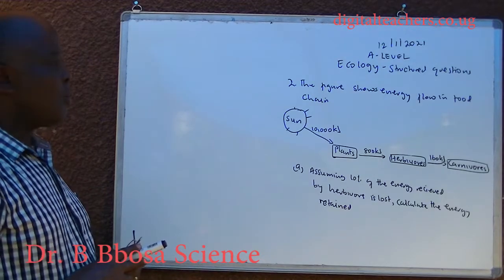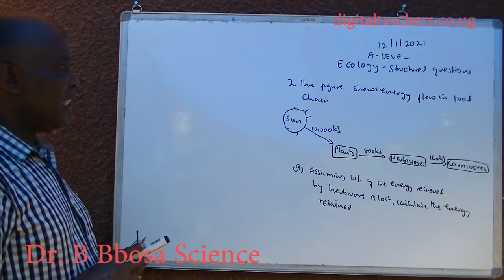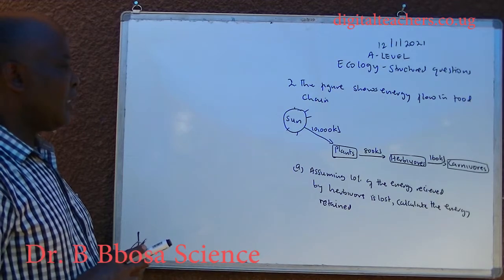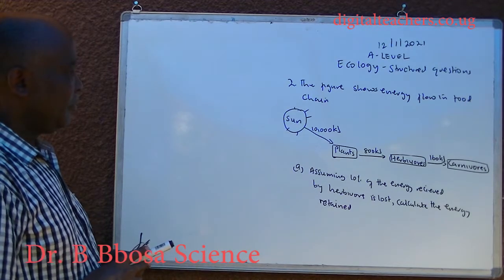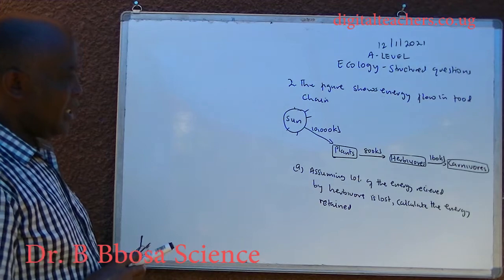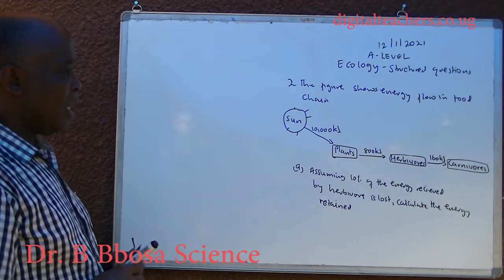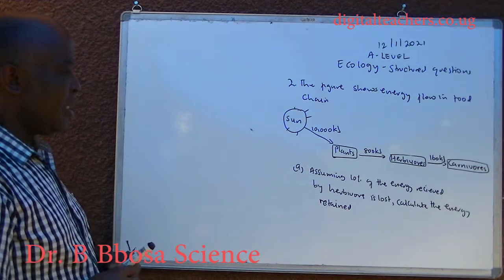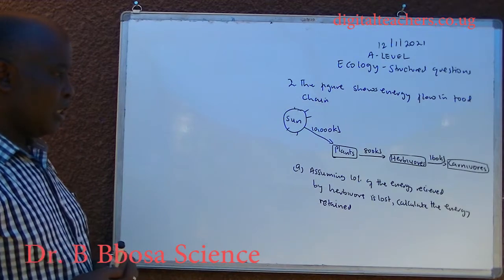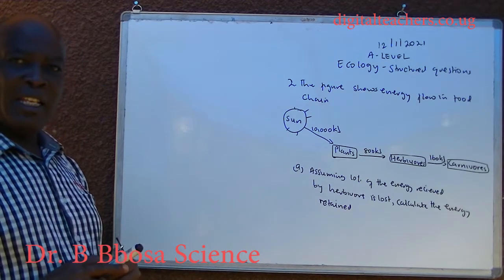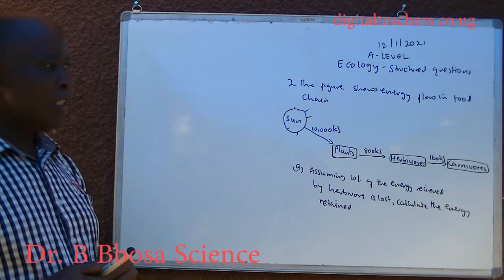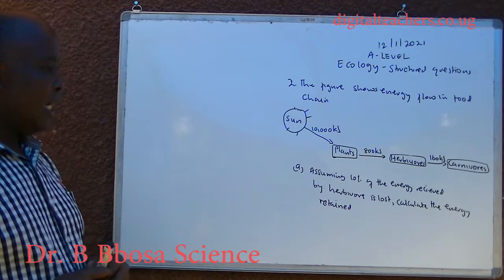Number two. The figure shows energy flow in a food chain, as you can see. Assuming 10% of energy received by herbivores is lost, calculate the energy retained. You can pause and answer.